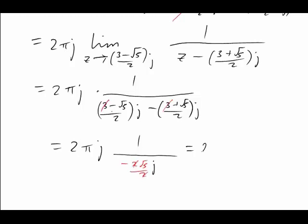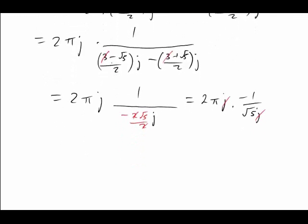So that now simplifies to 2πj times -1/(√5 × j). And now the j's cancel. We would have expected that because we're expecting a real answer. And that just leaves me with -2π/√5.